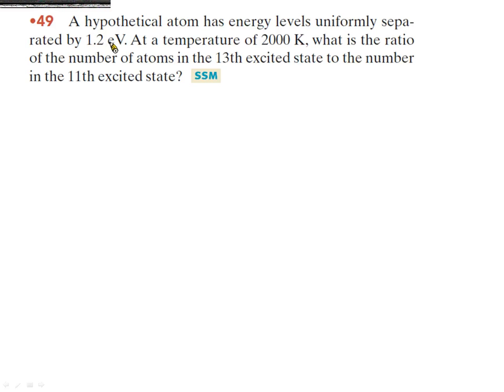是均匀分布的，均匀分布每一个能阶之间的间距是1.2个电子伏特。现在呢，在2000K的温度下请问